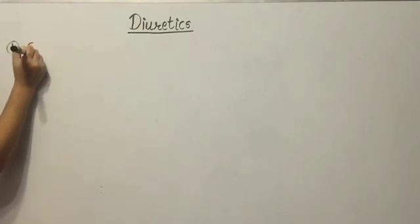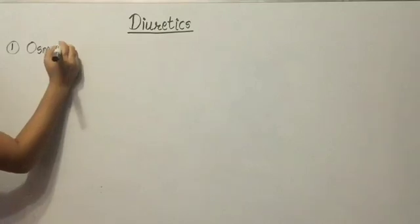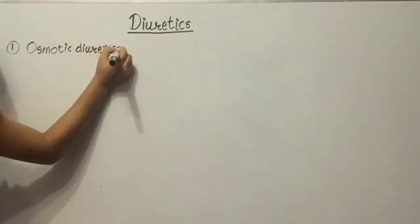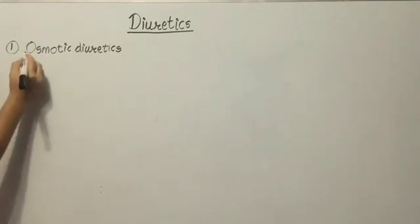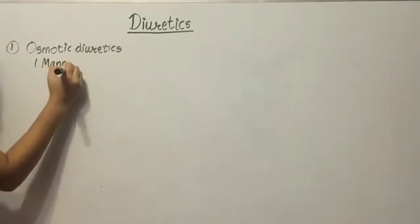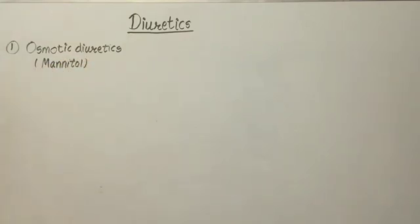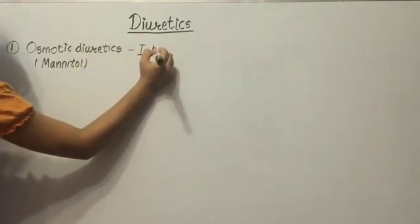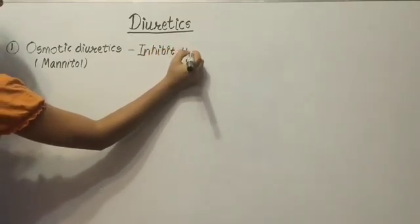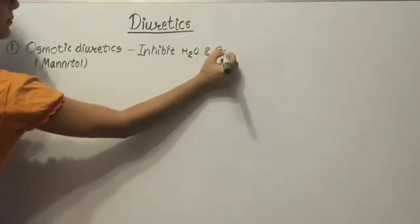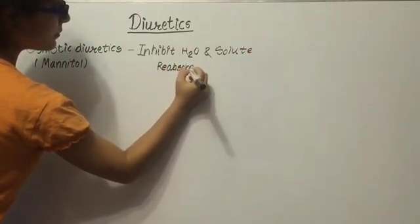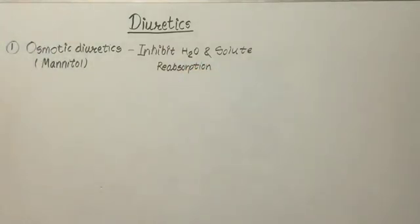First group is osmotic diuretics. Drugs of osmotic diuretics like mannitol. What is the mechanism of action of osmotic diuretics? They inhibit water and solute reabsorption.